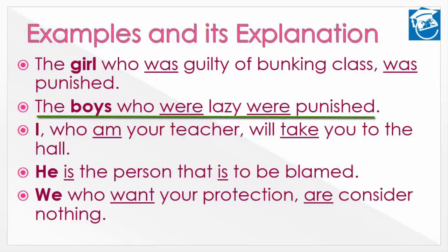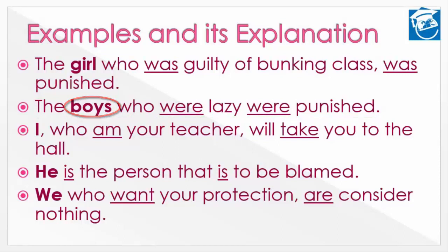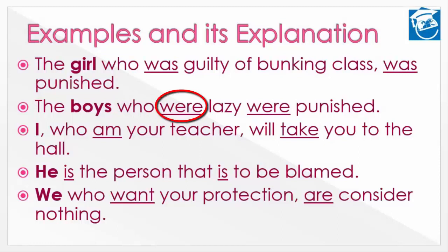'The boys who were lazy were punished.' लड़के जो की सुस्त थे उन्हें सजा मिली। यहाँ antecedent 'boys' है जो plural और third person है। इसलिए verb में 'was' की जगह 'were' का उपयोग किया गया — जो हमेशा plural nouns या pronouns के लिए उपयोग होता है। 'Were lazy, were punished' — this is how verb, antecedent, and relative pronoun work together।